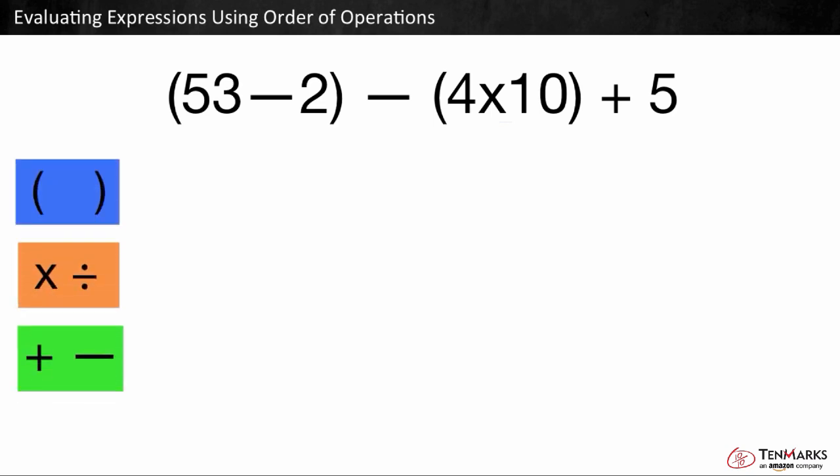Here's another example. Remember, when we have an expression like this, it's important to solve in the correct order. First, let's check to see if there are parentheses. There are two sets. First, we'll start with 53 minus 2. 53 minus 2 is equal to 51.